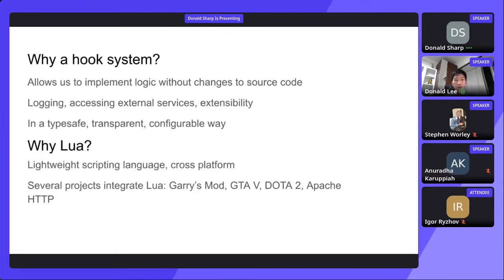So why a hooks system for FRR? It allows us to implement logic without changes to the source code, for things like logging and accessing external services. Ideally we want to do this in a type-safe, transparent, and configurable way. And why Lua? Lua is a lightweight scripting language used widely in many projects for precisely this kind of scripting behavior — a lot in games and also in networking projects.